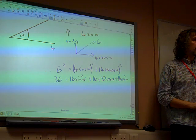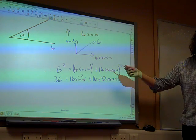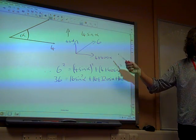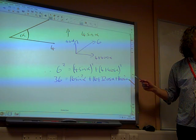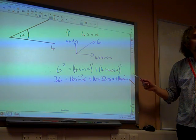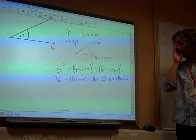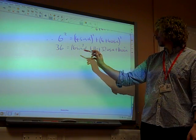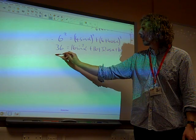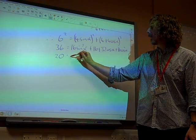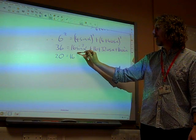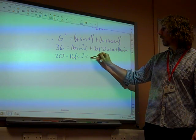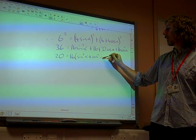I'm multiplying out that bracket. That's 4 cos alpha, 4 plus 4 cos alpha and 4 plus 4 cos alpha. So, can we see that that would give me that? So, we've then got, what have we got? We've got 36. Let's take away the 16. That is 20 is 16 lots of sin squared alpha plus cos squared alpha plus 32 lots of cos alpha.